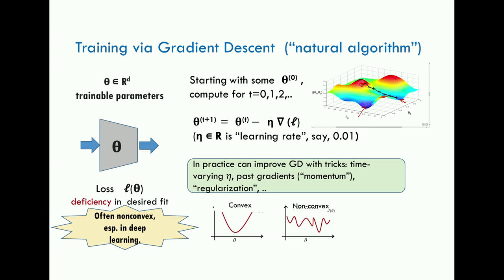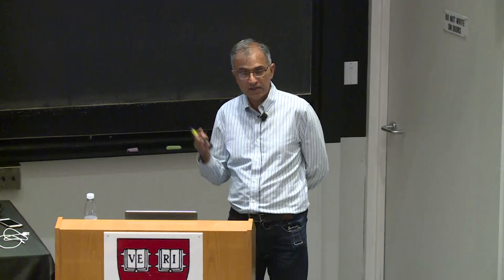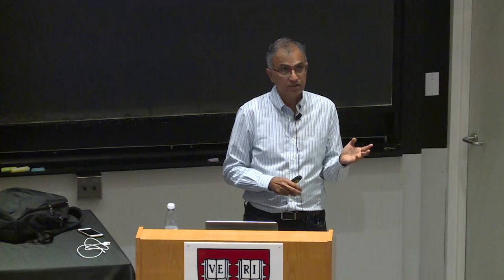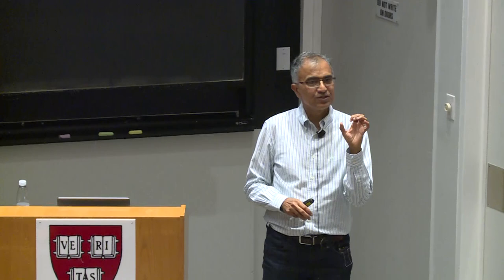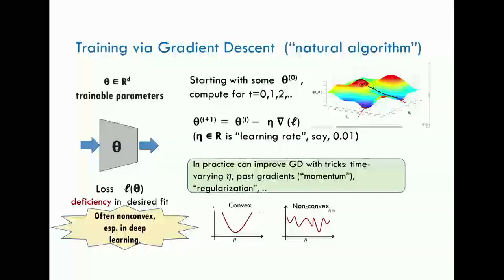In practice gradient descent can be improved by various tricks: using a time-varying learning rate eta that starts large and decreases over time; momentum, which keeps track of past gradients as well as the current one; and regularization, the idea of adding a separate term to the loss function to encourage solutions with desirable properties beyond just minimizing training loss.